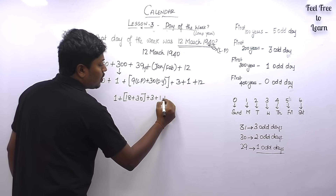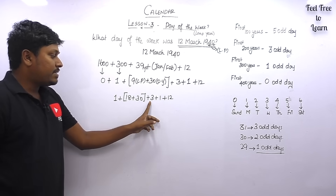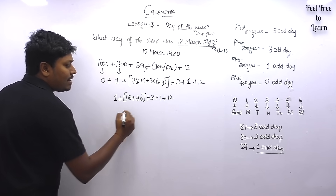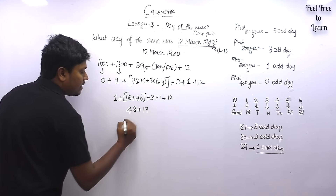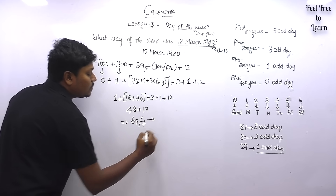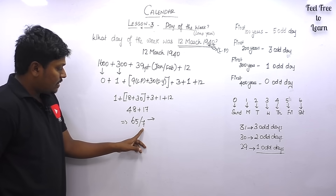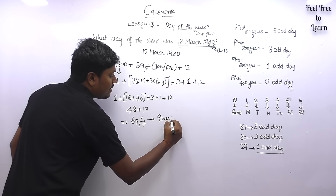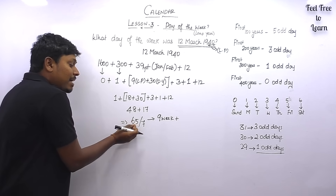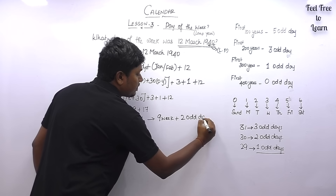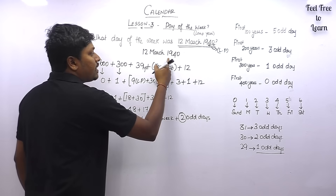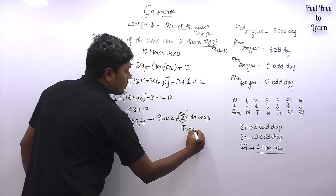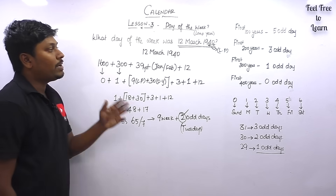Now adding all values: 0 + 1 + 18 + 30 + 3 + 1 + 12 = 65. Dividing 65 by 7 to convert to weeks and odd days: 9 × 7 = 63, leaving 2 odd days. So 12th March 1940 falls on the 2nd odd day, which is Tuesday. Tuesday is the answer for question 1.